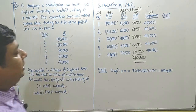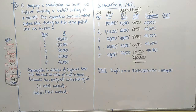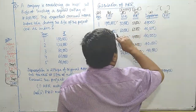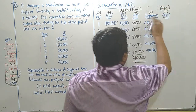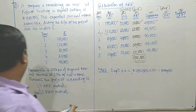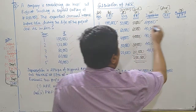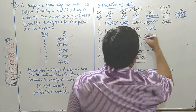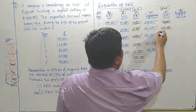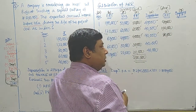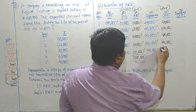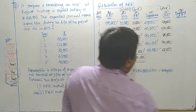Once we get depreciation of 40,000 every year, we can calculate CFAT. CFAT is PAT plus depreciation, that is column D plus column E. First year: PAT is 50,000 and depreciation is 40,000, so CFAT is 90,000. Second year: 60 plus 40 is 1 lakh. Third year: 40 plus 40 is 80,000. Fourth year: 30 plus 40 is 70,000. Fifth year: 20 plus 40 is 60,000. We now have the CFAT column.